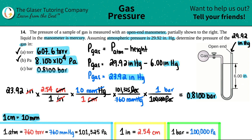And now we have all the answers. Just memorize those pressure unit relationships at the bottom — be able to identify your different pressure units. That's all we're doing right now: learning how to convert. Hope this helped, let me know in the comments, thank you so much for watching, subscribe to the channel, and I'll see you in later lessons.